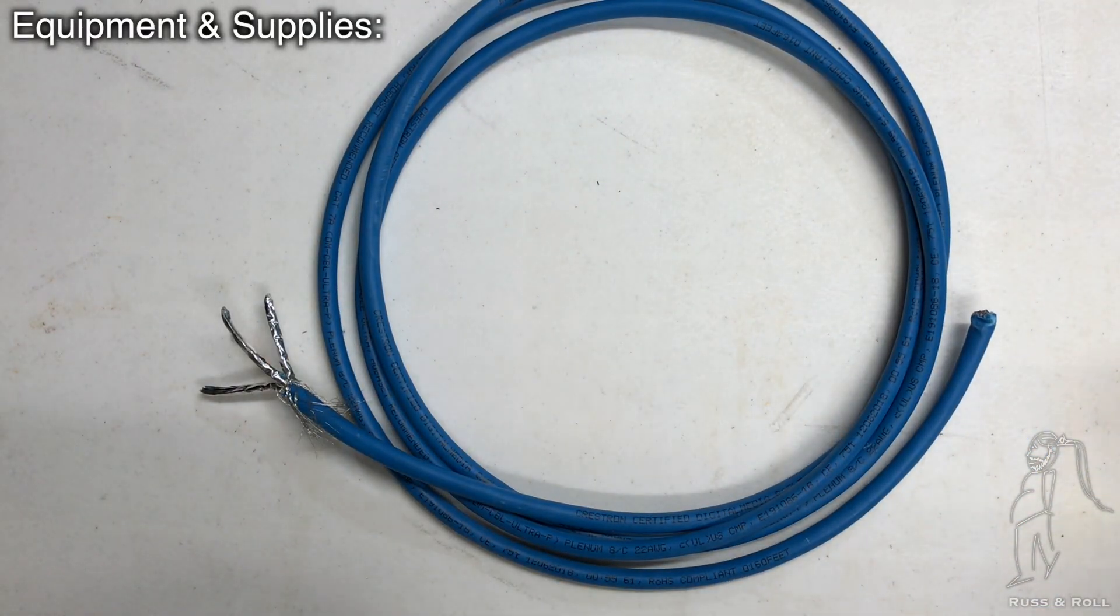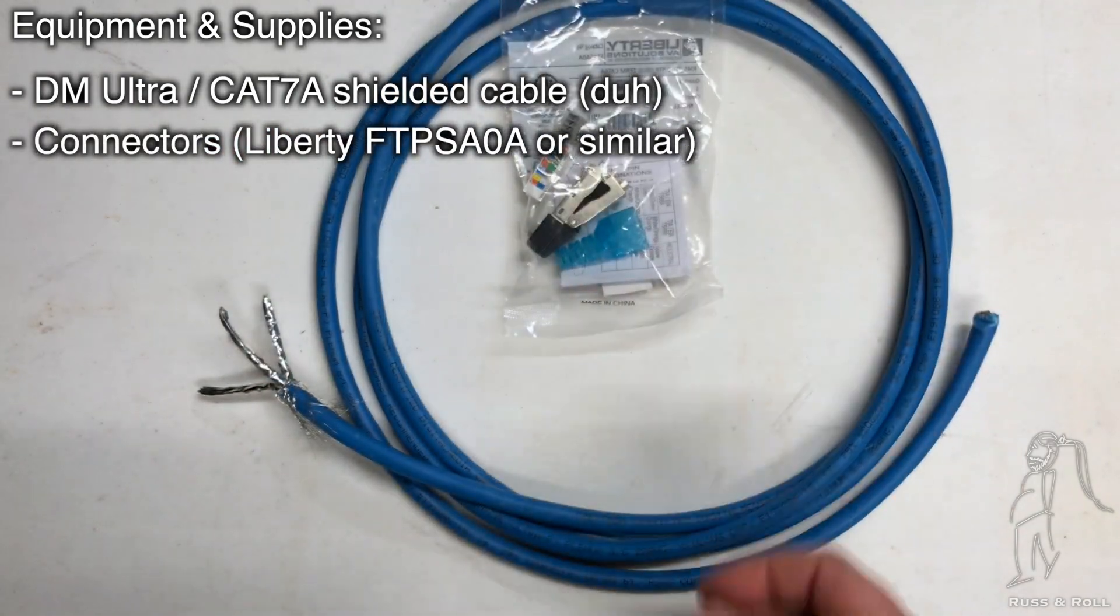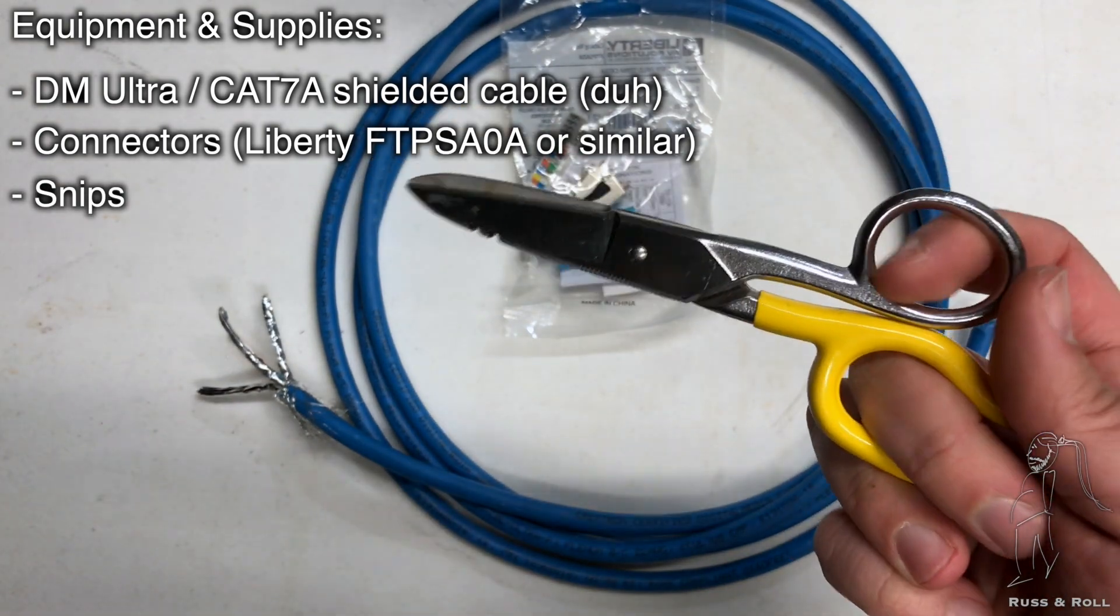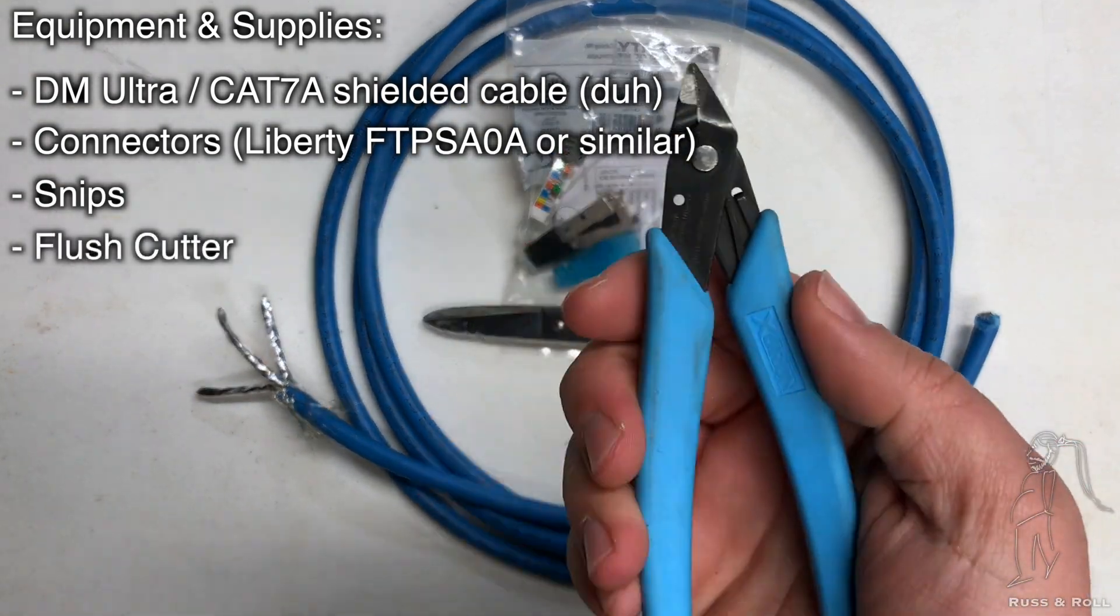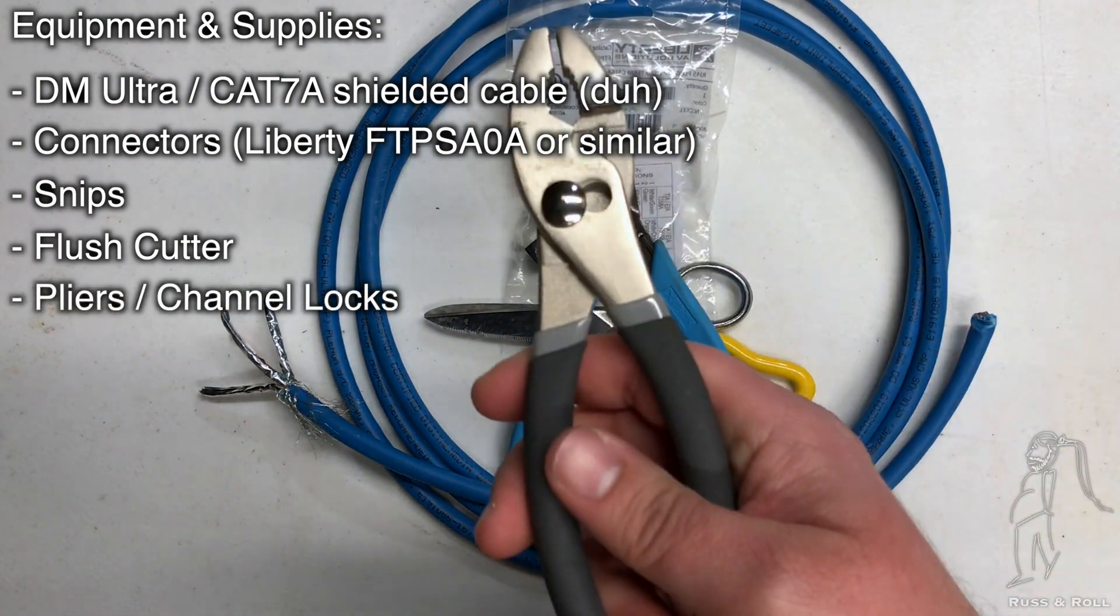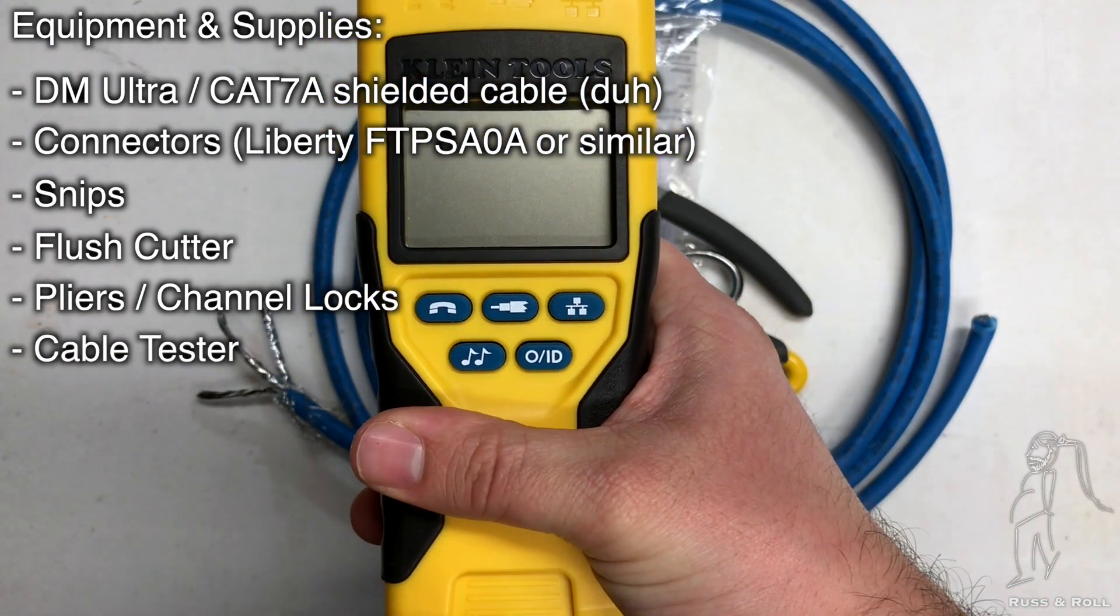Let's take a look at what we're going to use first. First you need the cable and obviously the connectors. We're using these Liberty FTP SA0As. You're also going to need a pair of snips to help you terminate the cable, as well as some flush cutters. You're also going to need a pair of pliers or channel locks. And for the love of all that is holy, please test your cables when you're done terminating them.